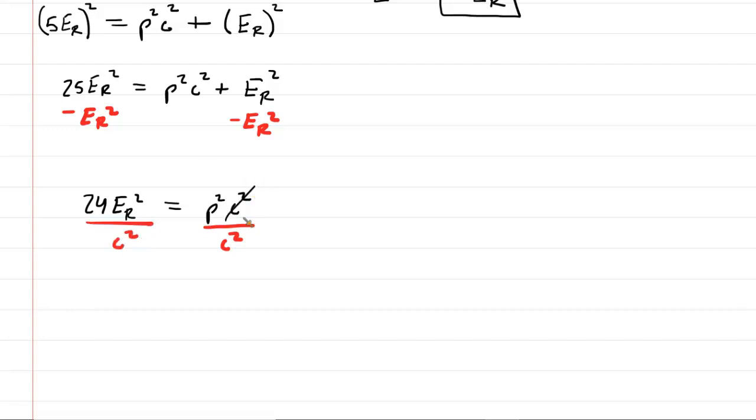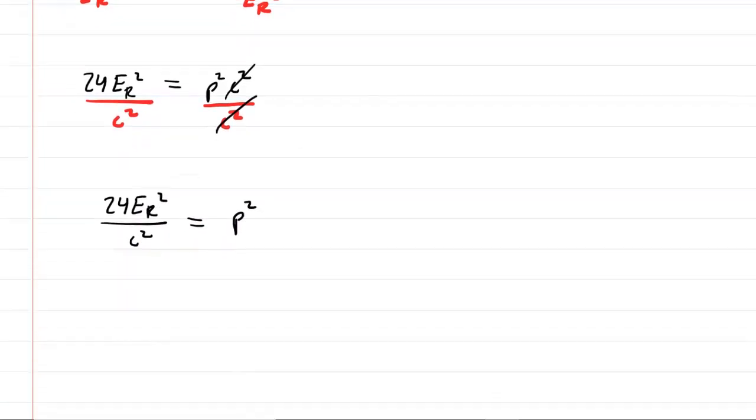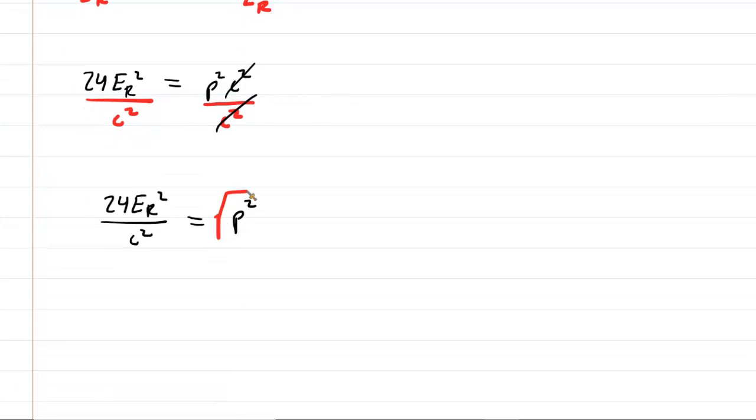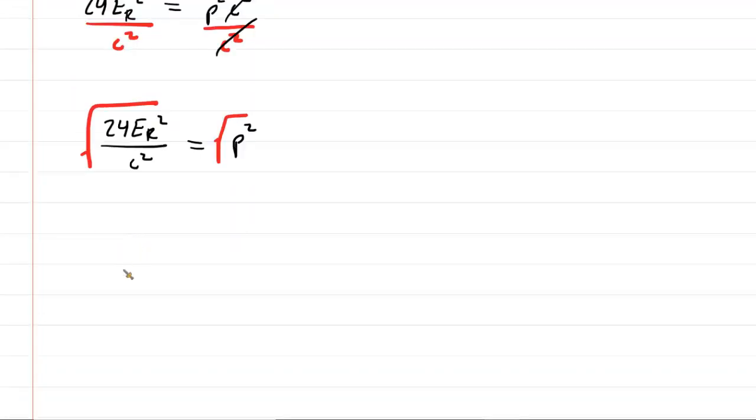So that cancels out the c squareds on the right hand side. And now we can see that 24 E sub R squared over c squared is equal to the momentum squared. We don't quite have momentum yet. So of course, we need to take the square root of both sides. And on the left side of the equation, we're going to end up with the square root of 24. When you square root E sub R squared, you're just going to get E sub R. And then in the denominator, when you square root c squared, you're just going to get c. And then the right side is the momentum. So this would be our expression that we're going to apply for both the electron and proton.